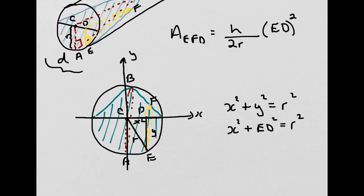What we want to do is isolate the variable ED. So we move the x squared to the other side, we subtract x squared from both sides, so we end up with ED squared equals r squared minus x squared.